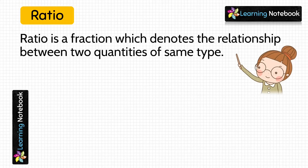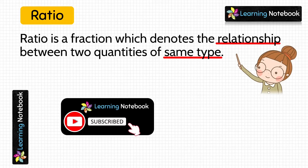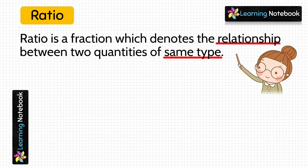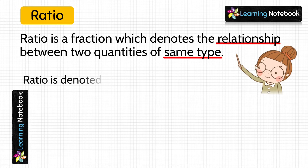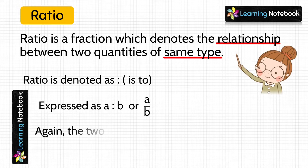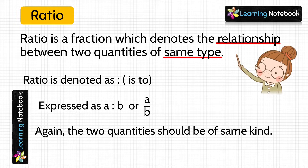From this story, we have learnt that ratio is a fraction which denotes the relationship between 2 quantities of same type. Students, do remember that ratio is comparison of quantities of same type. Ratio is denoted as colon, which is read as 'is to'. In general, ratio is expressed as A is to B or A by B, where A and B are quantities of the same kind.